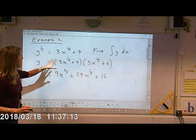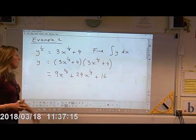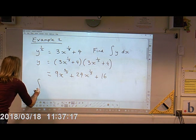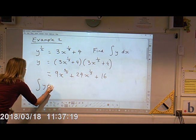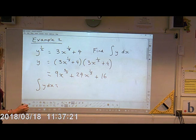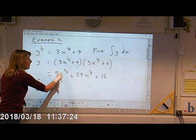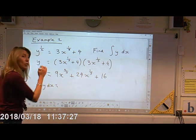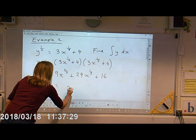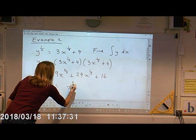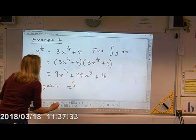Right, so I've now expanded that into something I can work with. So now, if I integrate with respect to Y, I just need to integrate this. So I'm going to add one to my two thirds, which gives me five thirds.